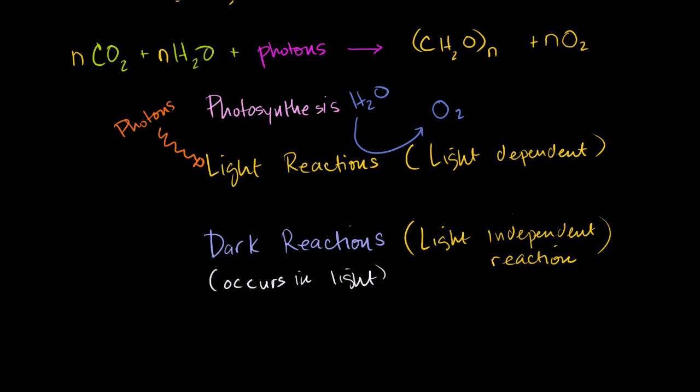So that's what happens in the light reactions, and I'm going to go much deeper on what actually occurs. And what the light reactions produce, it produces ATP, which we know is the cellular or the biological currency of energy. It produces ATP and it produces NADPH.